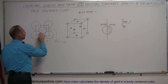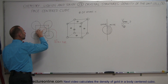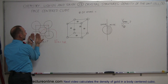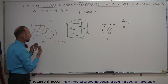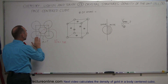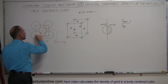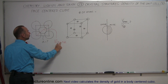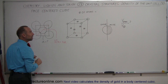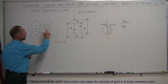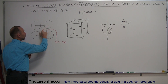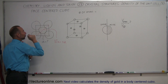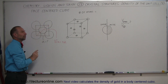On each of the faces, we have an atom embedded right at the same depth level. The diagonal across one of the faces, which equals the square root of two times the side A, is equal to four times the radius of an atom — one R, two, three, and four R across one face.